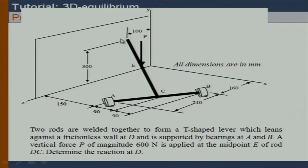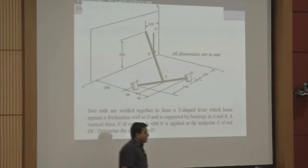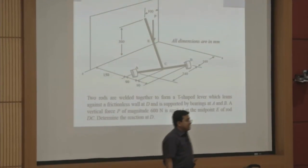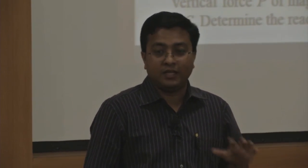So D is that wall. The concept here is taking the moment about the A-B axis. But before we do that, we need to convince ourselves how the bearing reactions are acting and why we are able to take the moment about the A-B axis. That's the whole issue.